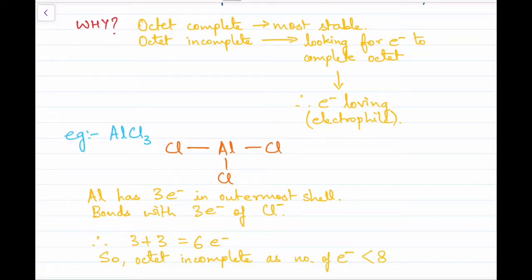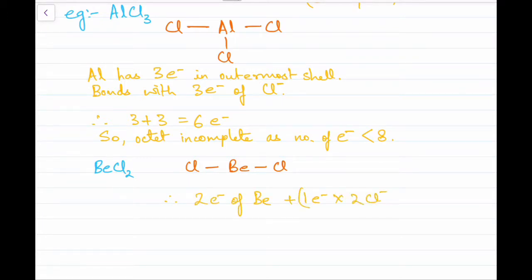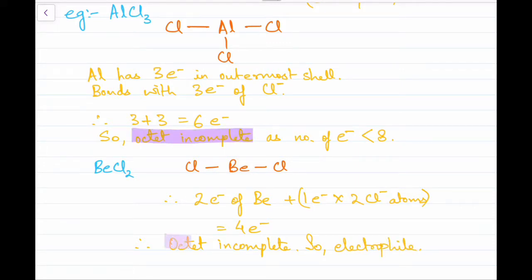So the octet for aluminium in AlCl3 is not complete, and therefore it is an electrophile. Similarly for BeCl2: beryllium has two electrons in its outermost shell and forms covalent bonds with two chlorine atoms, giving it four electrons — the octet is not complete, so BeCl2 is also an electrophile.